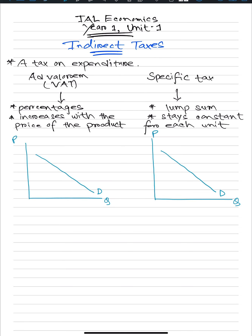Now the supply curve — let's say this is S1, the initial supply curve. This is PE, my equilibrium price and existing equilibrium quantity. For example, taxes usually increase in a question they're going to give you. So I say the ad valorem tax increased from 5% to 7%. And for specific tax, I say the tax increased from 5 dirhams to 7 dirhams.